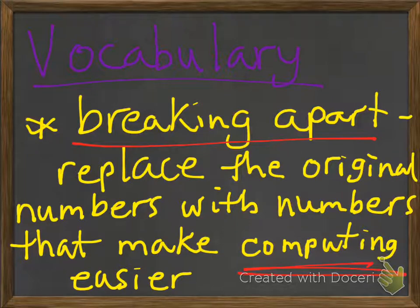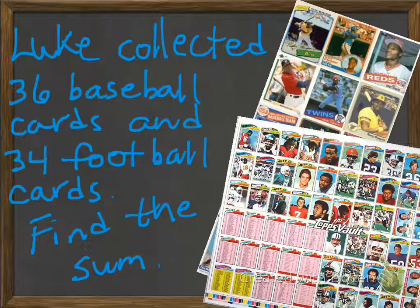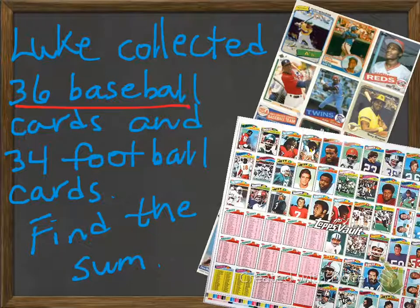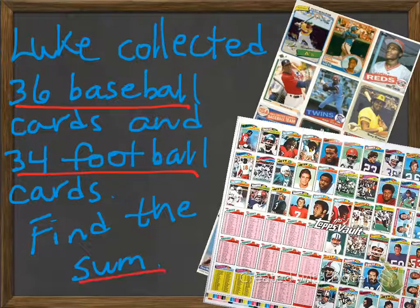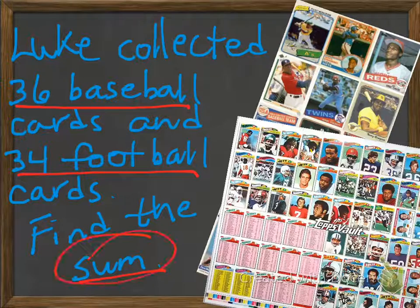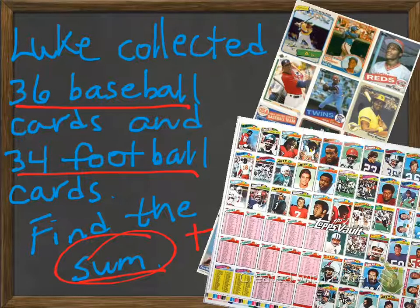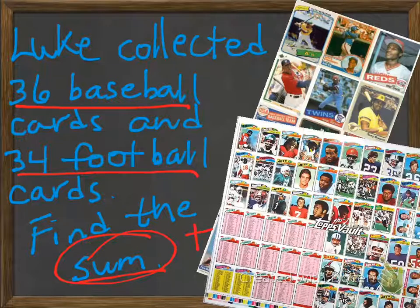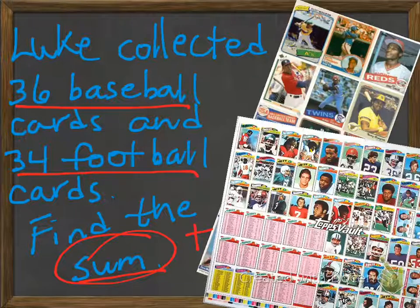Let's try one. Let's say Luke collected 36 baseball cards and 34 football cards. Find the sum. And that's our clue. Sum means to add. But when we have 36 baseball cards and 34 football cards, using mental math may not be the easiest just to do in your head. So let's try and find an easier way.